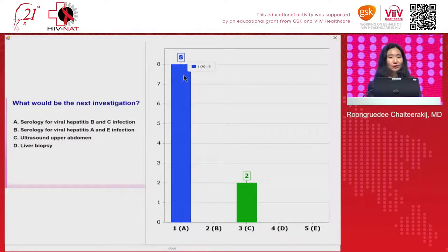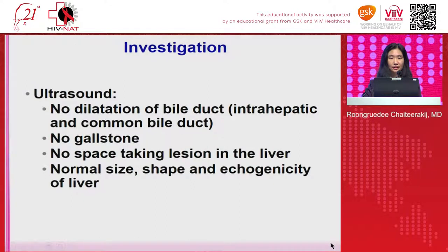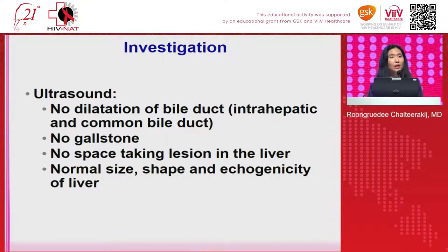Most of you answered to take the serology for viral hepatitis B and C infection. But in reality, what I did first was doing the ultrasound, because her chief complaint is epigastric pain and low-grade fever. We wondered whether she had epigastric pain and fever because of acute cholecystitis or cholangitis from gallstone. So we did the ultrasound first, and fortunately we didn't find dilatation of the bile duct, either intrahepatic or common bile duct, which means there was no obstruction from gallstone or CBD stone.